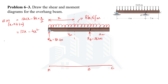Using M = 12x − 4x²: at x = 0, M = 0; at x = 1 m, M = 12 − 4 = 8 kN·m. This is a quadratic equation, meaning the bending moment varies as a second-degree curve (parabola) between A and B.